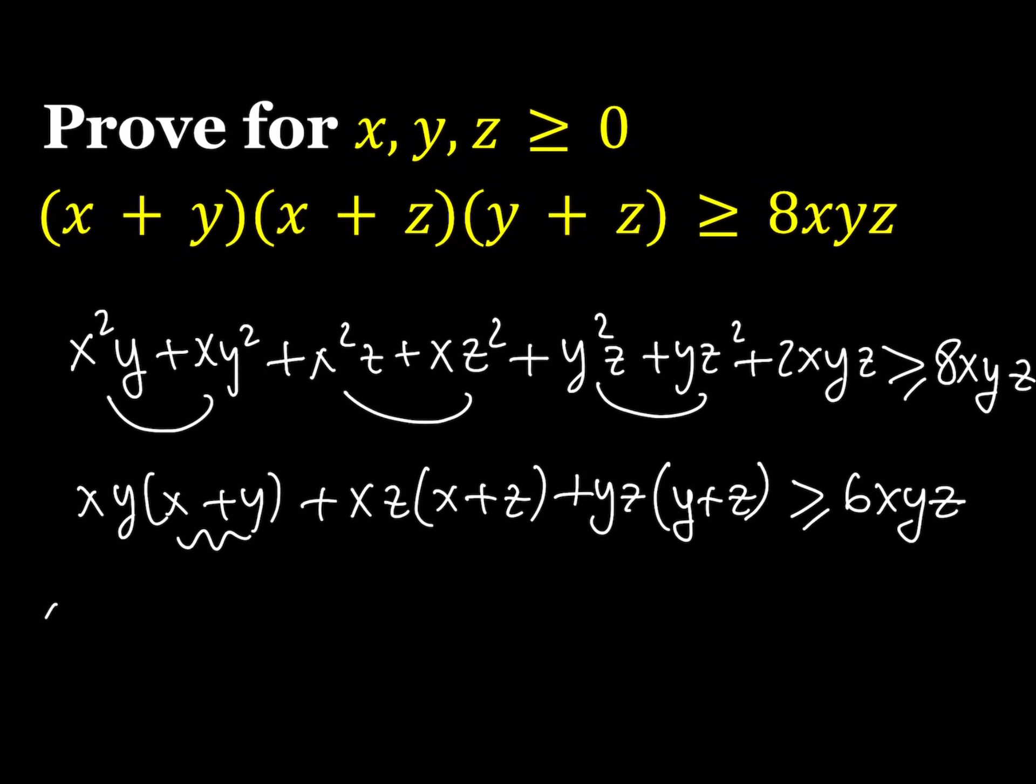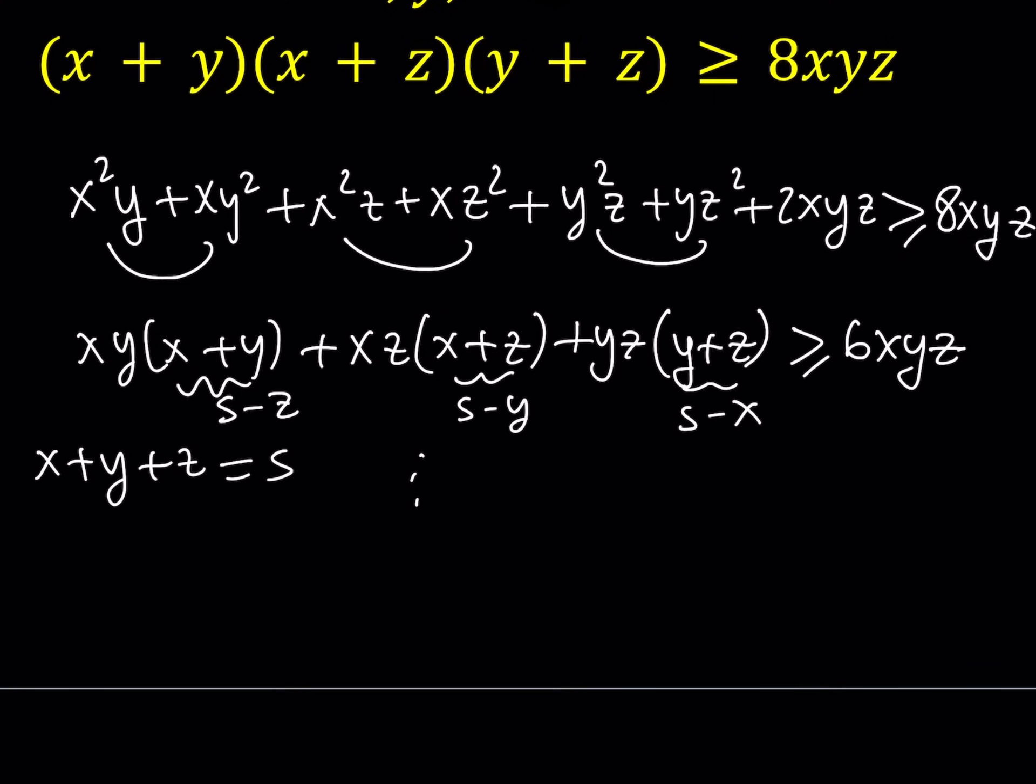So now we get something like this. And here it might be helpful to assume that x plus y plus z is equal to something like s, so that we can write all of these in terms of s. For example, x plus y would be s minus z, this would be s minus y, and this would be s minus x.